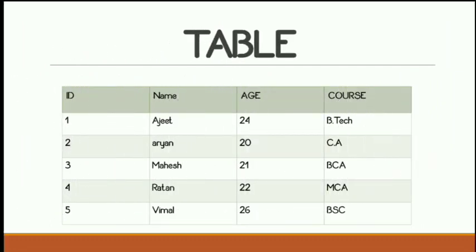Here you can see a table which consists of four columns and six rows. The column names are id, name, age, and course. The rows are numbered 1 through 5. This is how you build or draw a table in RDBMS.